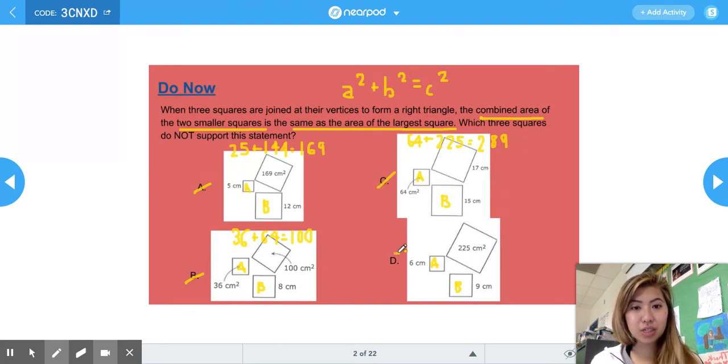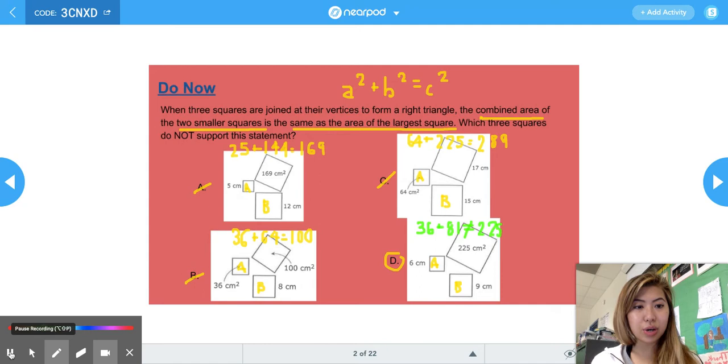So the correct answer must be D. And just to make sure, 6 times 6 is 36, or 6 squared is 36. 9 times 9, or 9 squared is 81. 36 plus 81 is not equal to 225. It's actually 117. So that's why D is the correct answer.